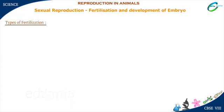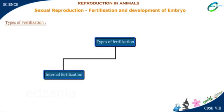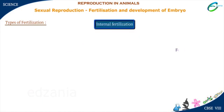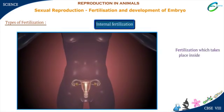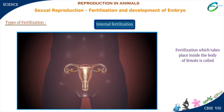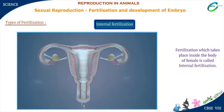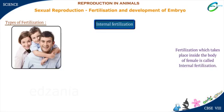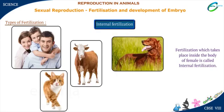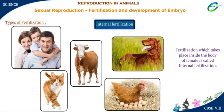There are two ways by which fertilization takes place: internal fertilization and external fertilization. Fertilization which takes place inside the body of the female is called internal fertilization. In humans, cows, dogs, and cats, fertilization is internal. Even in hens, the fertilization is internal — the egg is fertilized first in the hen's body before it is laid.